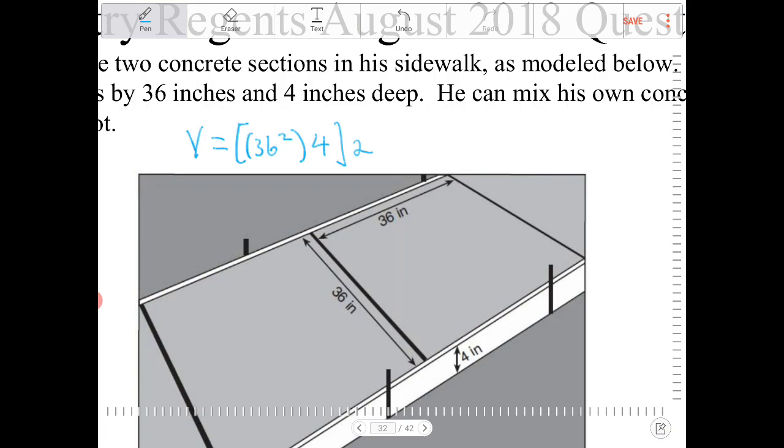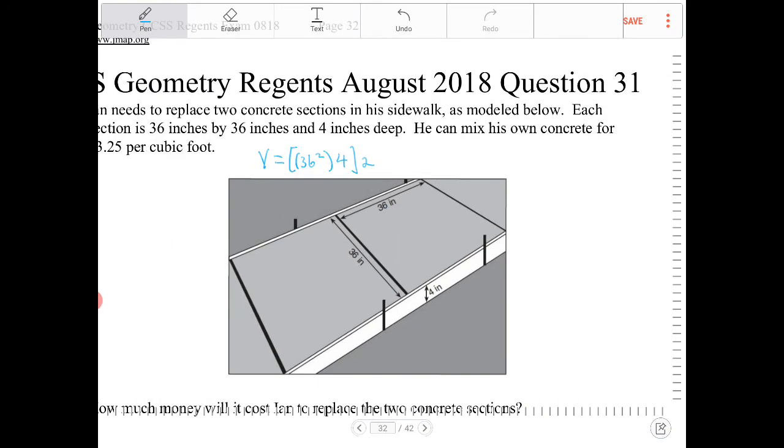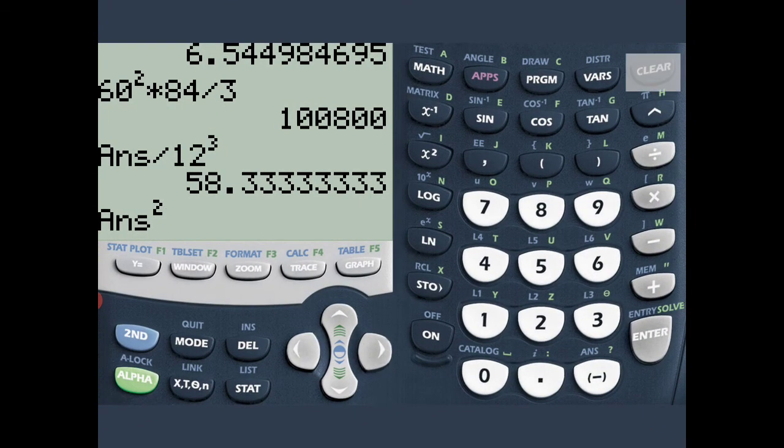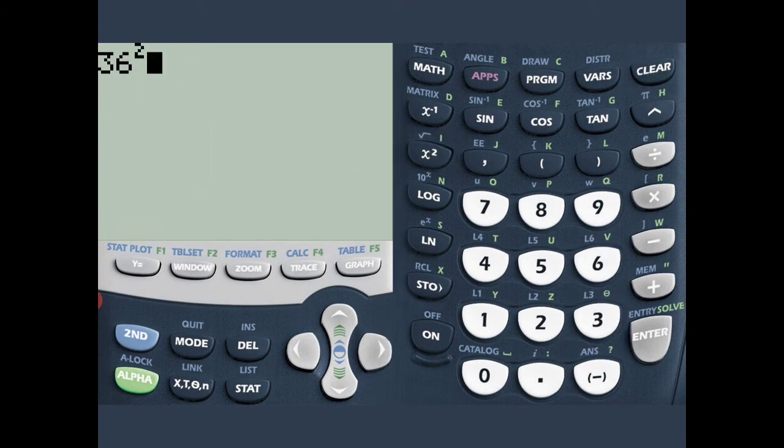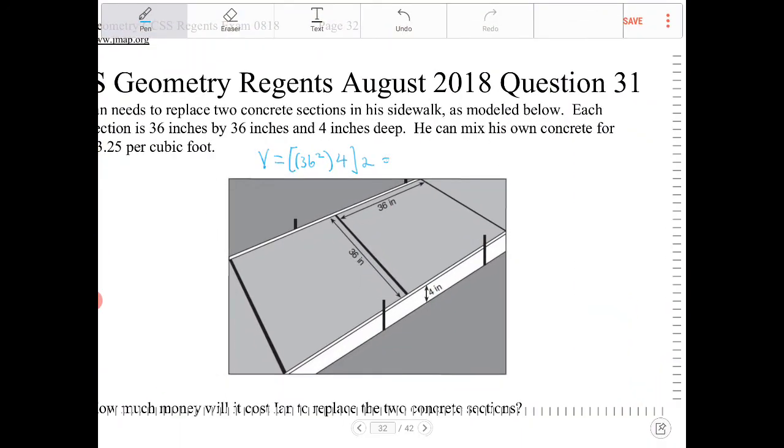So let's figure out exactly the volume of concrete that we will need here. We're going to enter this in the calculator. So 36 squared times 4 times 2, and that will be 10,368. So this will be 10,368 cubic inches.